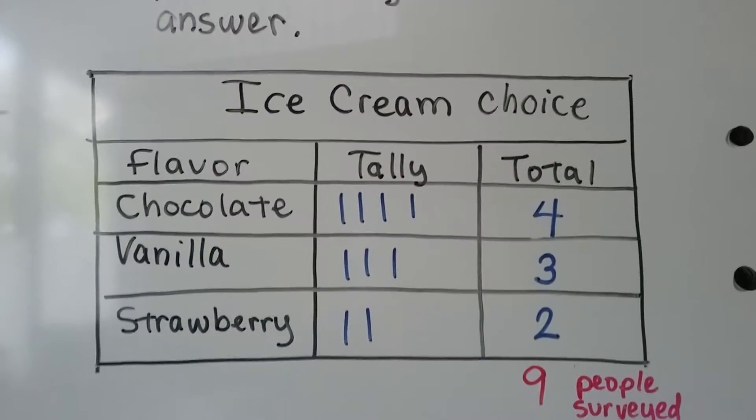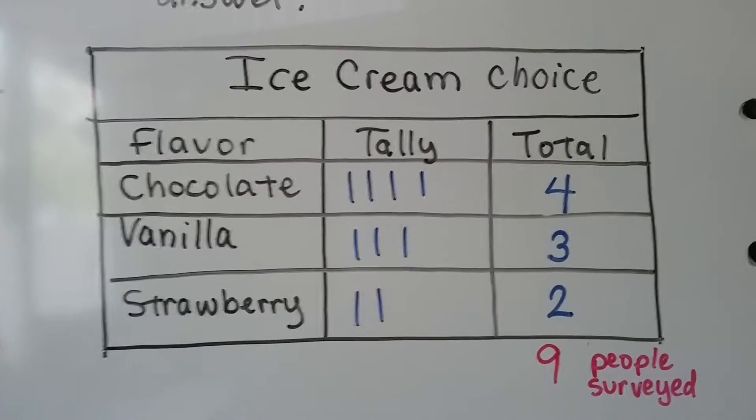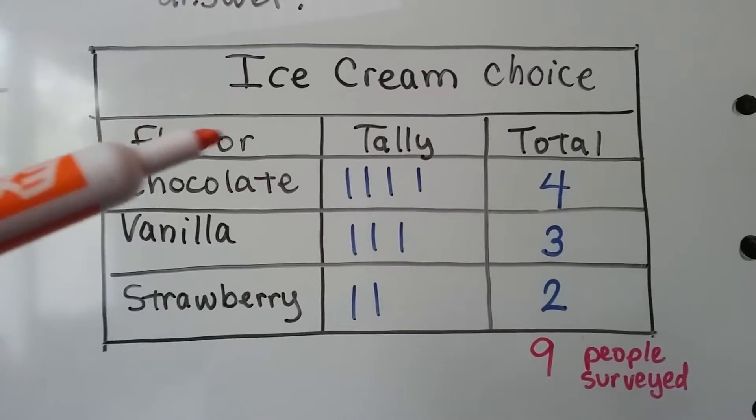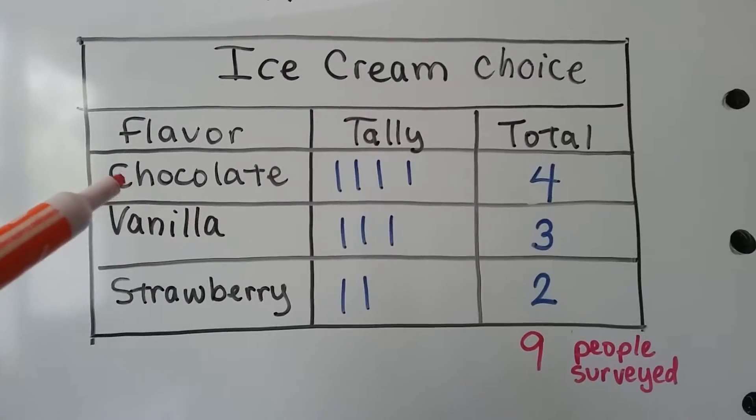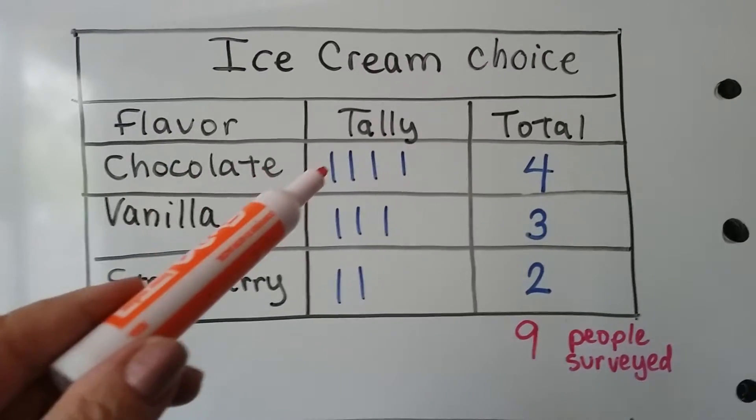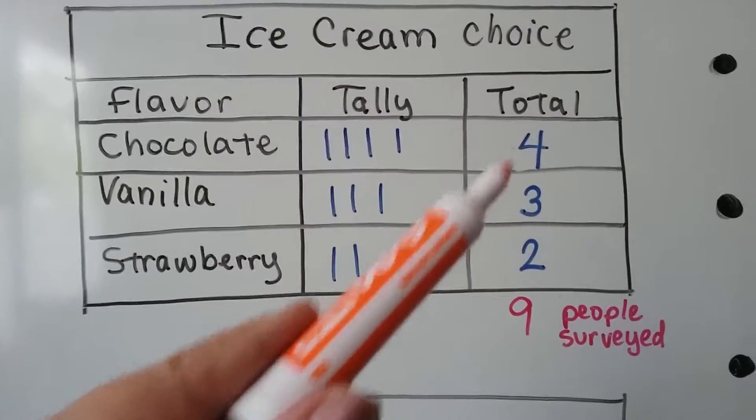If we asked nine people which ice cream choice they want, we have the flavors, here's our tally marks, here's our totals. If we ask nine people, and let's pretend that four people said chocolate. So we put four tally marks. That's a total of four.